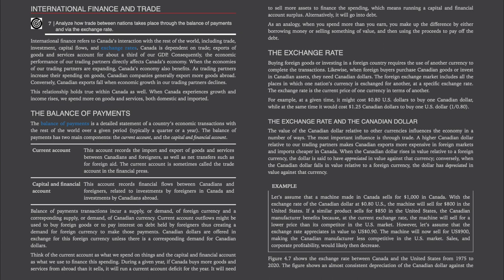During a given year, if Canada buys more goods and services from abroad than it sells, it will run a current account deficit for the year. It will need to sell more assets to finance the spending, which means running a capital and financial account surplus. As an analogy, when you spend more than you earn, you make up the difference by either borrowing money or selling something of value and then using the proceeds to pay off the debt.